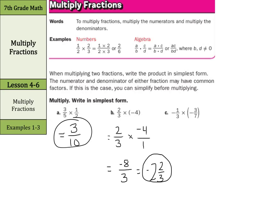Now for the last one, I'm going to rewrite this with the negatives in the numerators — it makes it much simpler to have the negatives attached to the numerators. Look at these four cross factors: nothing with the one or the seven, but the three and negative three are the same number, so divide both by three. Three divided by three is one, and negative three divided by three is negative one — but don't lose track of those negatives. Negative one times negative one is positive one, and one times seven is seven. So our answer is one-seventh.